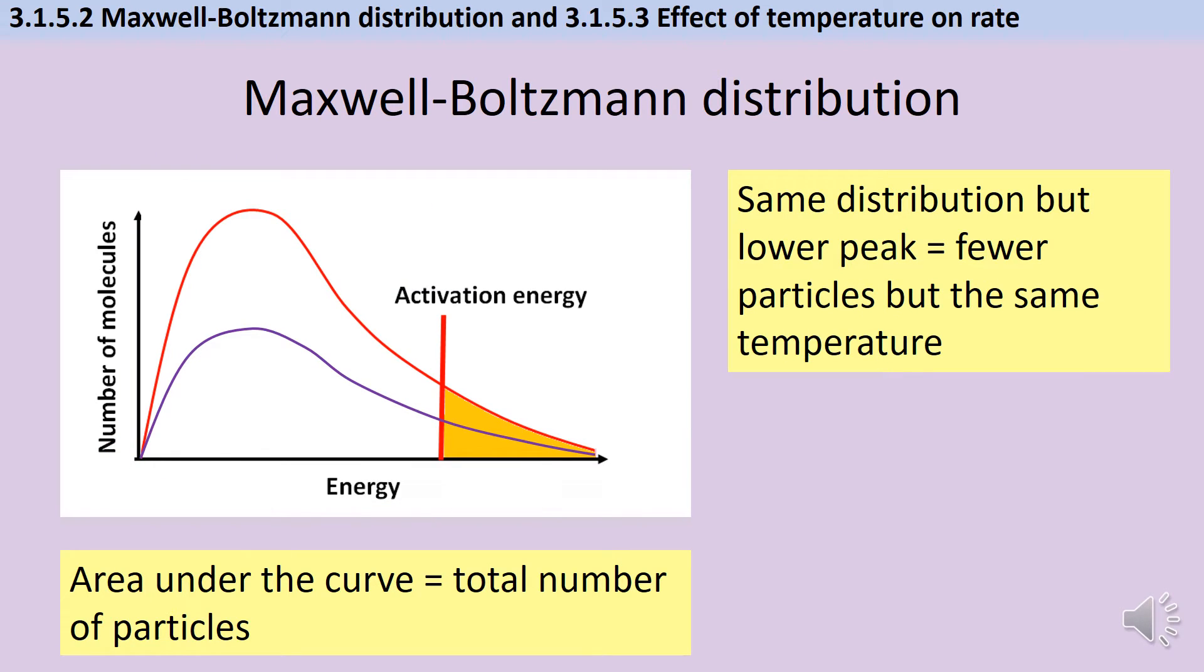As long as the overall shape of the distribution remains the same with the most probable energy still in the same place, just the height of the peak changing, that tells us that the temperature is still the same because the overall proportion of particles that have each amount of energy hasn't changed but the pressure has changed. So my purple line here would represent there being fewer particles in the same space so it's a lower pressure environment.